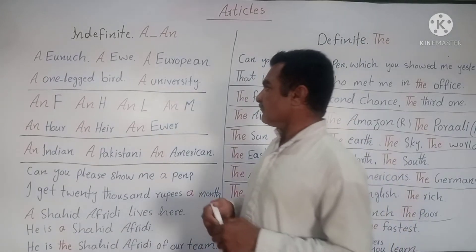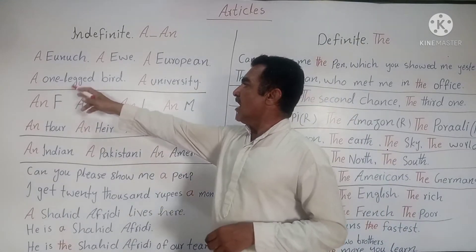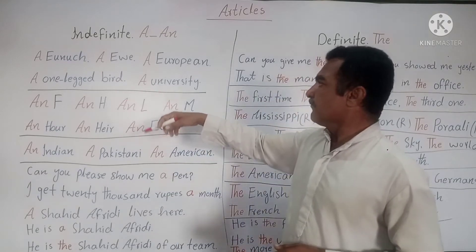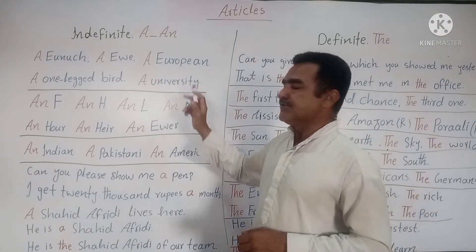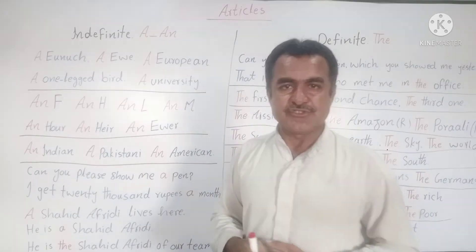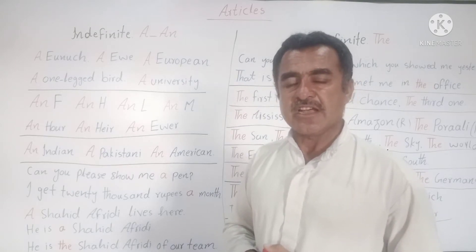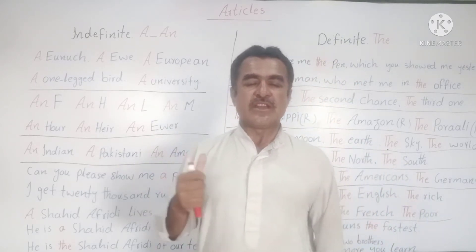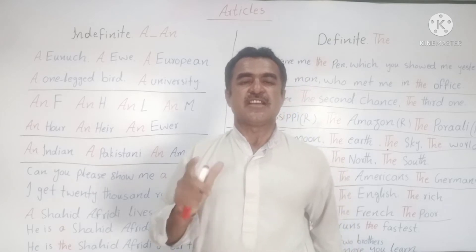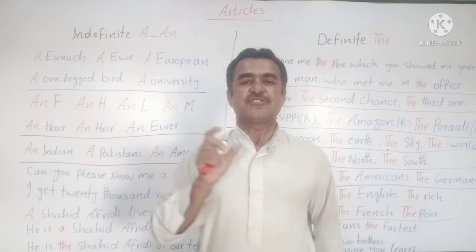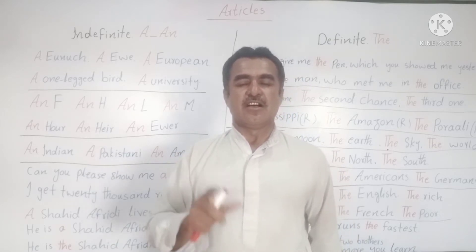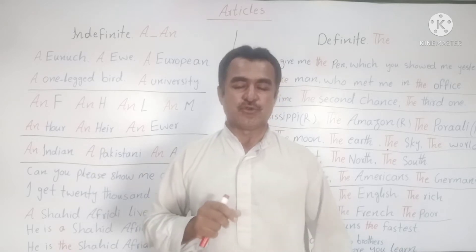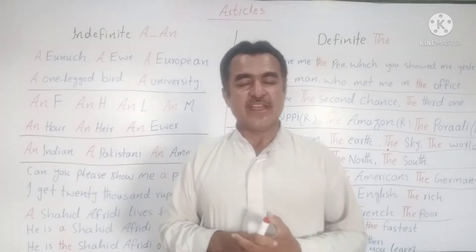'A university' — you can see university starts with the letter 'u' but it has a consonant sound, that's why we don't say 'an university', we say 'a university'.